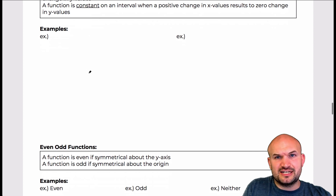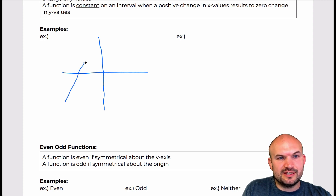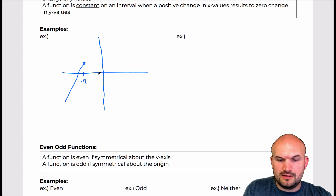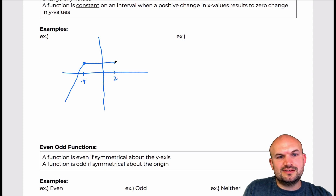Let's just kind of look at an example here of a graph. I'm going to sketch a random graph and we'll look at it. So let's just look at something like this and let's call that negative 4. Then let's continue here to like 2, and let's do a jump. Let's call that like 3, and then the graph goes up.